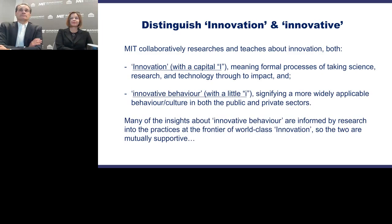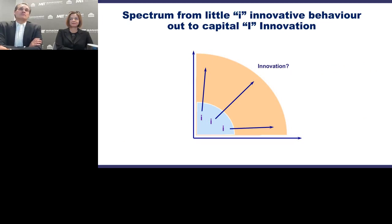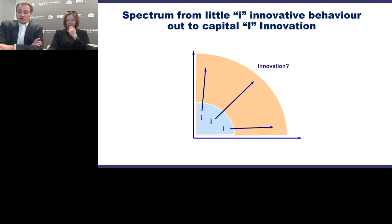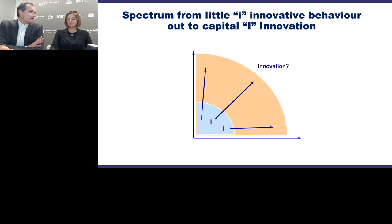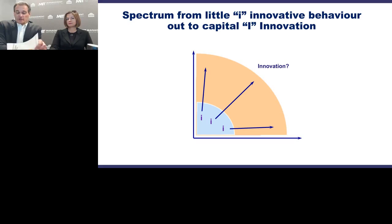We see a spectrum from little-i innovative behavior out to capital-I innovation. We don't want people to think innovation is only the stuff at the frontier—everybody has a role in little-i innovation and it can have a huge impact. One way I differentiate them is capital-I innovation involves a 10X change—the kinds of things startups and venture capitalists support—while little-i innovation is more of a 10% change: doing something 10% faster, 10% more cheaply, or 10% more effectively for customers. It's not just incremental six-sigma improvements; it's still real innovation.